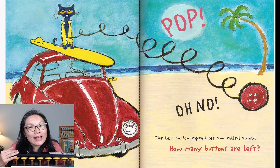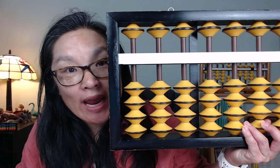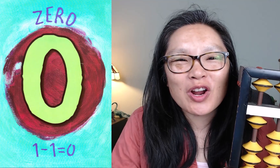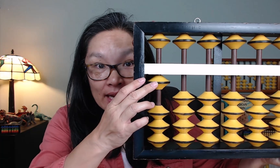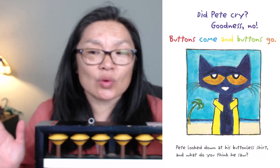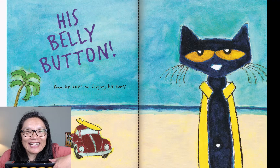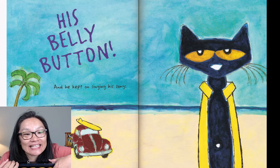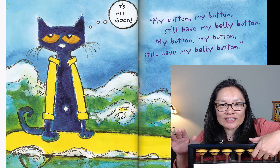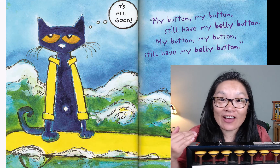Pop! Oh no! The last button popped off and rolled away. How many buttons are left? Zero! Pete has zero buttons. We had one and then one popped off, so now there's no more — zero. There are zero beads on the abacus, zero buttons on Pete's shirt. Did Pete cry? Goodness no! Buttons come and buttons go. Pete looked down at his buttonless shirt — and what did he see? His belly button! And he kept singing — my button, my button, still have my belly button.